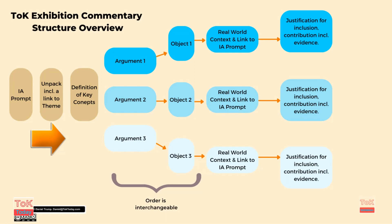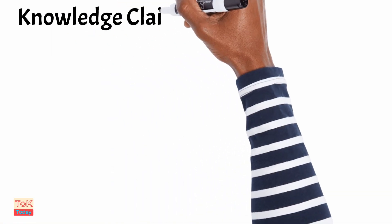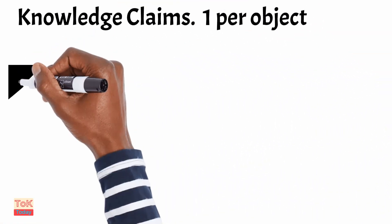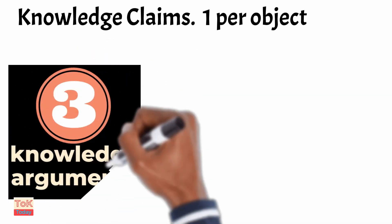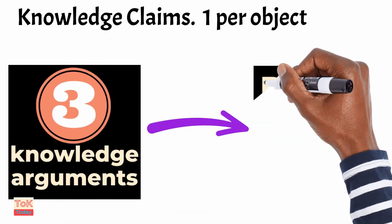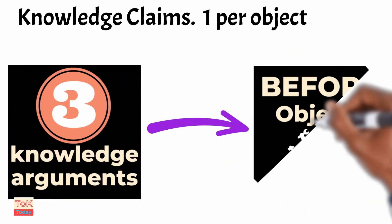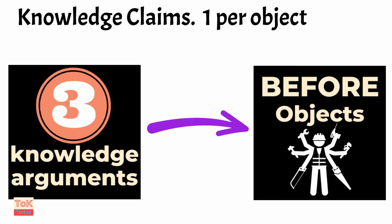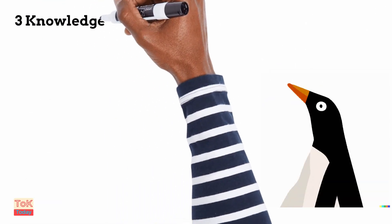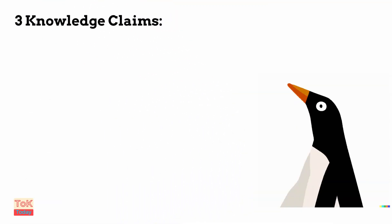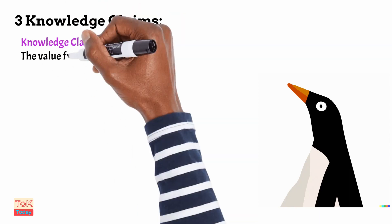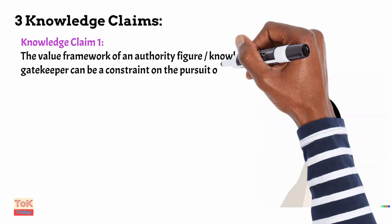Here's how the overall commentary will be structured for all three objects. I strongly recommend coming up with three knowledge arguments to explore in your commentary before you come up with your objects. This makes coming up with the objects much easier, and it means that your commentary will be far more specific. So here are my three knowledge claims — knowledge claim one: the value framework of an authority figure or knowledge gatekeeper can be a constraint on the pursuit of knowledge.